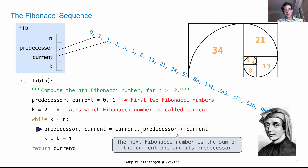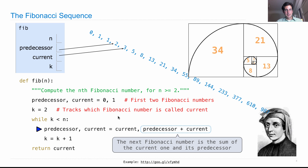So now they're bound to the second and third. If we execute this again, they're bound to the third and fourth. Now they're bound to the fourth and fifth. This is an interesting example because the computation that we do to compute predecessor requires current, and the computation that we do to compute the new current value requires predecessor. So the most natural way to express this is to just compute both of these values at the same time before binding them to these names.